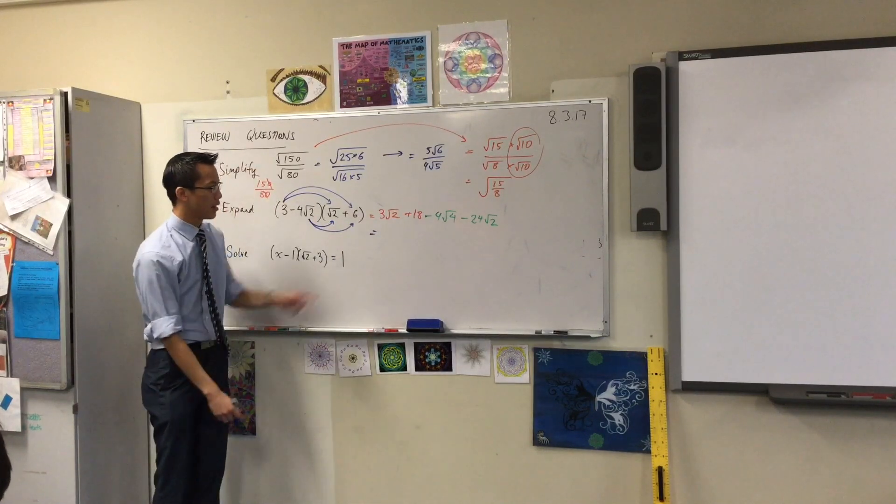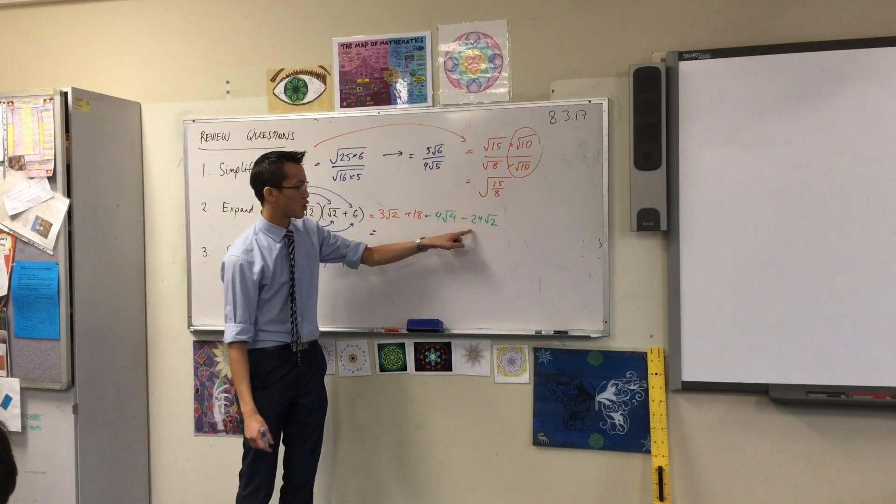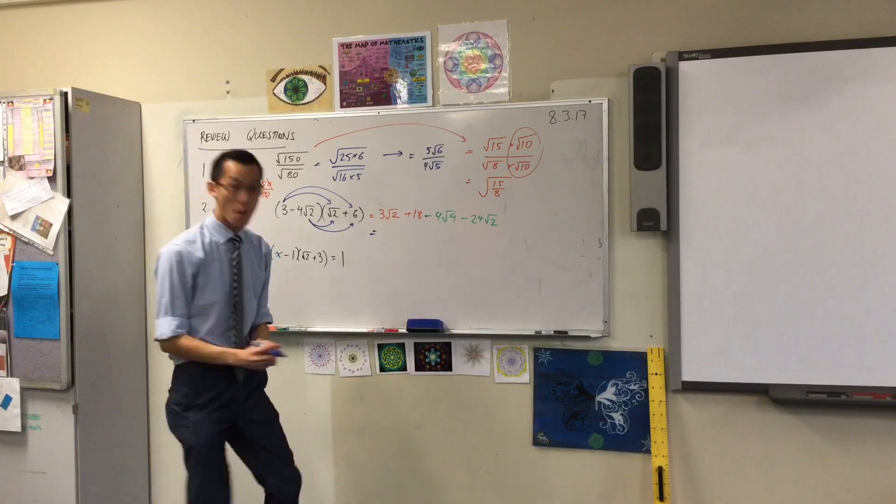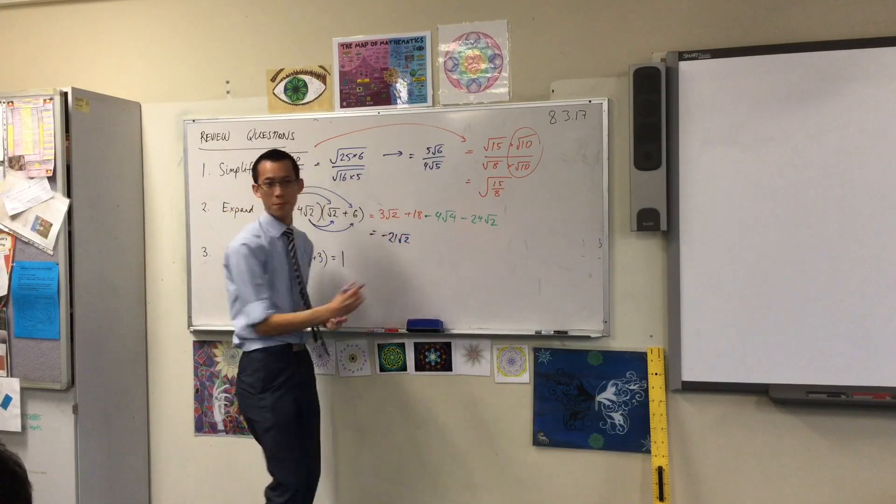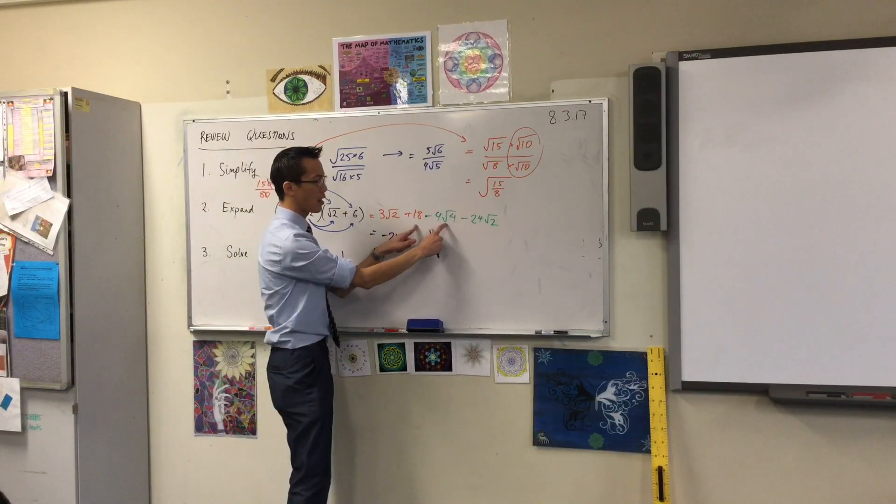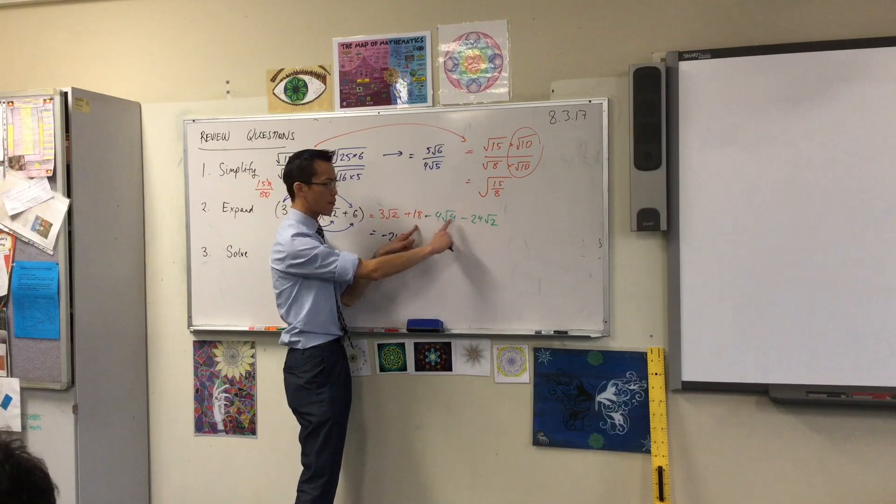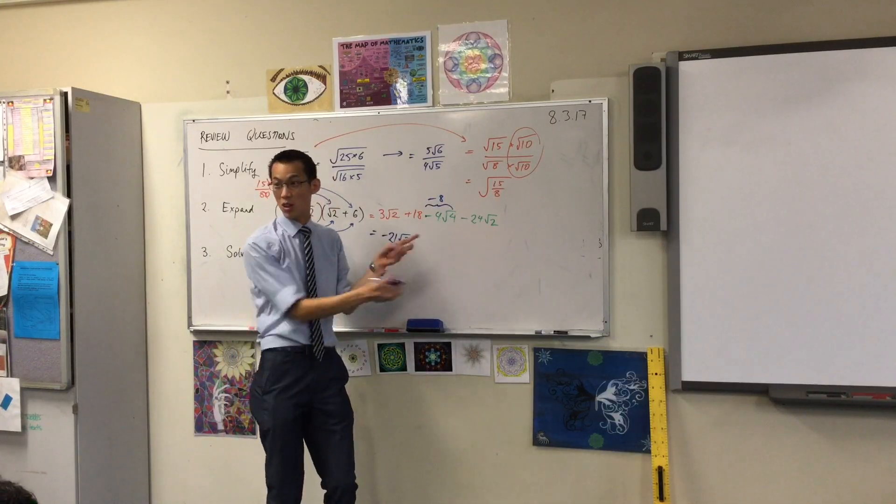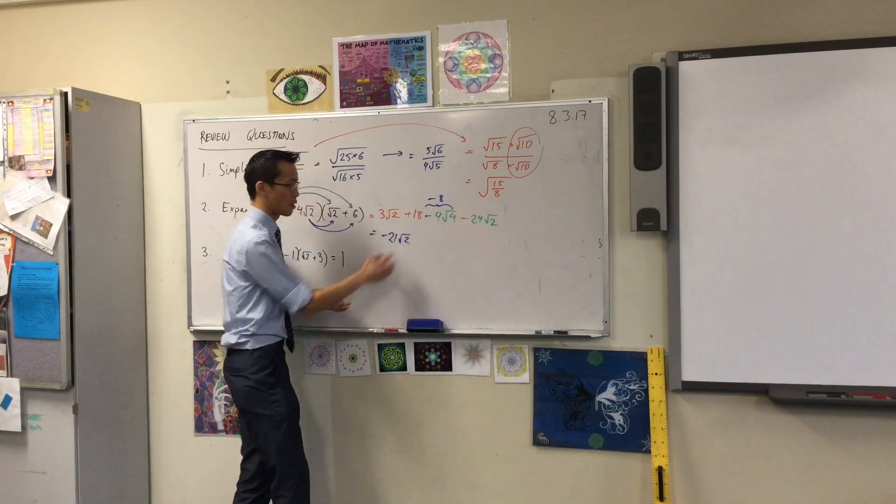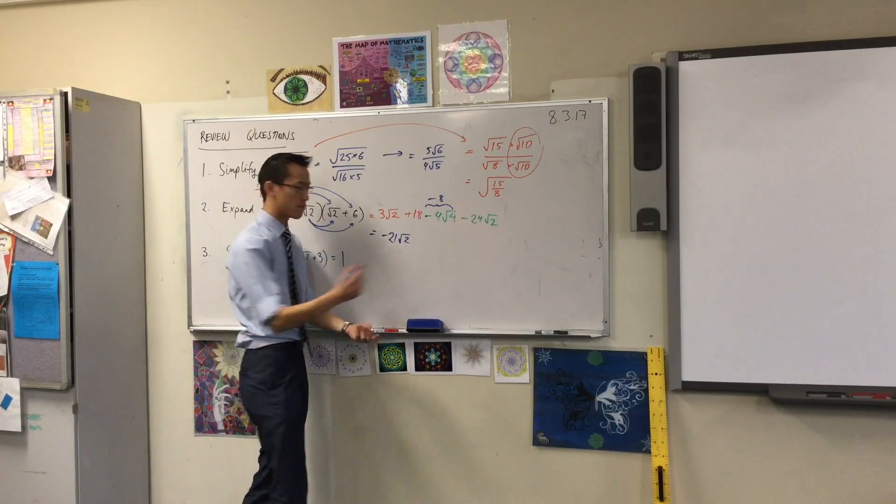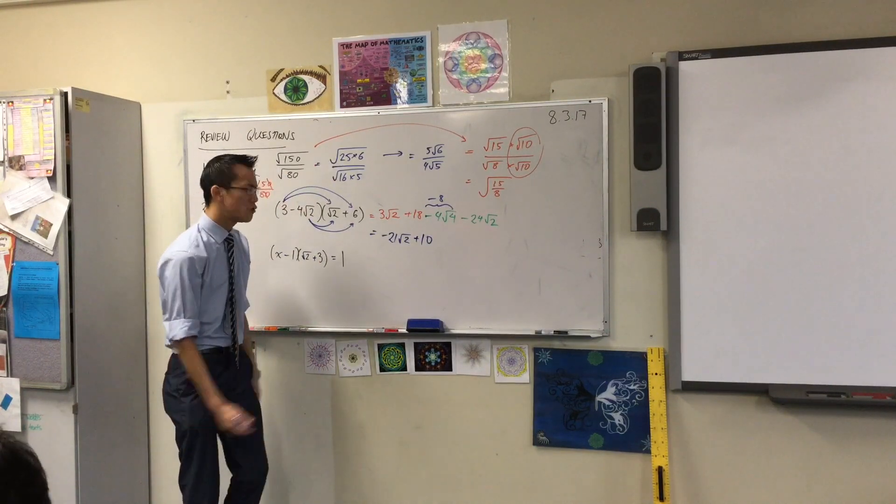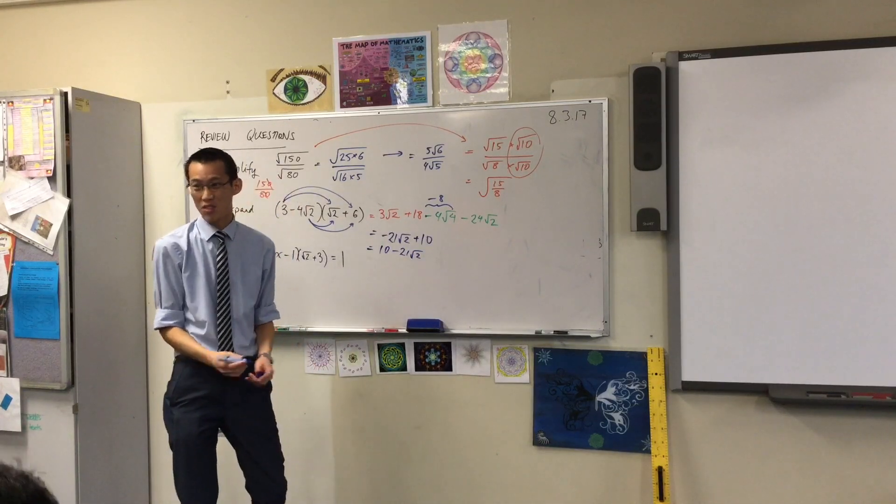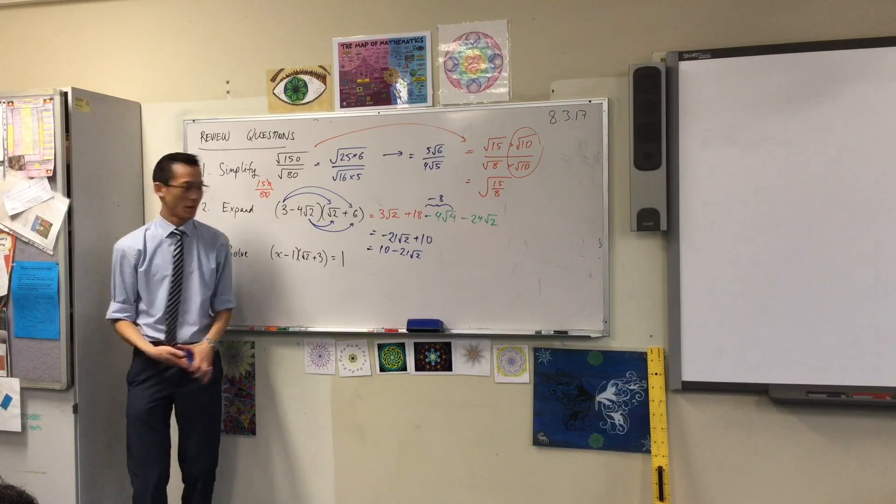Now, we can tighten this up a little bit. 3 root 2 minus 24 root 2. Those are like terms, aren't they? So, how many root 2s will I be left with? Minus 21 of them. 3 take away 24. What about what's happening in here? I can rewrite this. How would I rewrite that? That is minus 8 because root 4 is just 2. So, it's not actually a surd, even though it looks like it's got a square root in it. So, 18 minus 8 is 10. You may have written it like this, but those are both fine.